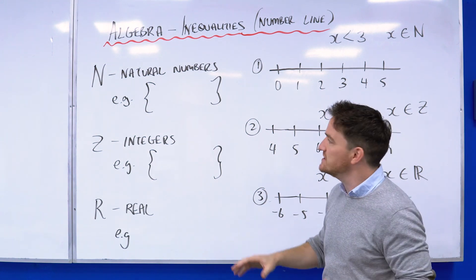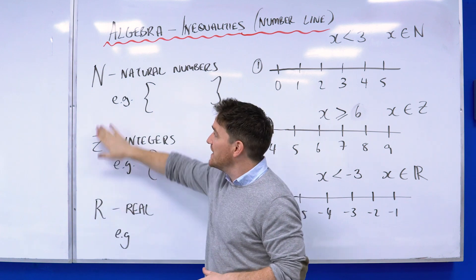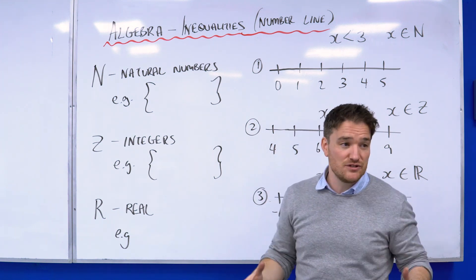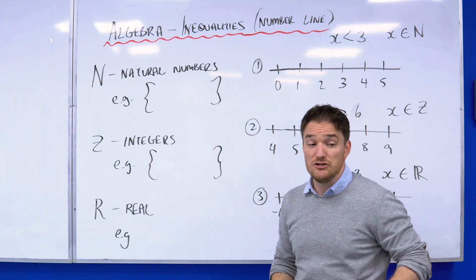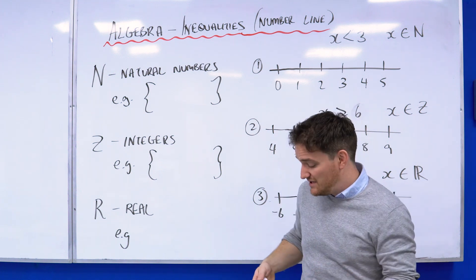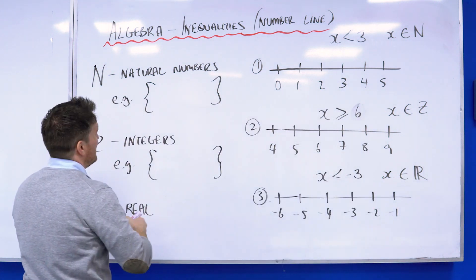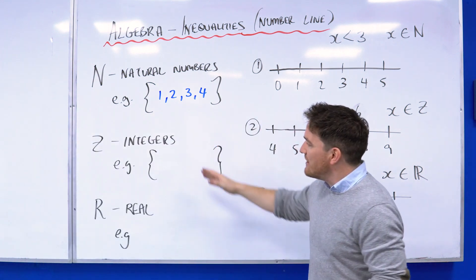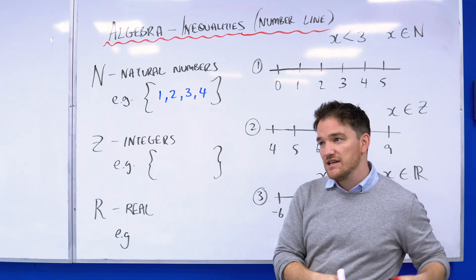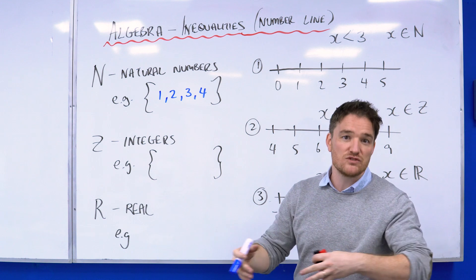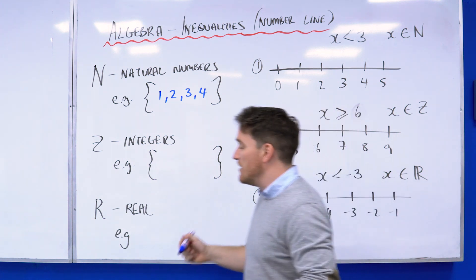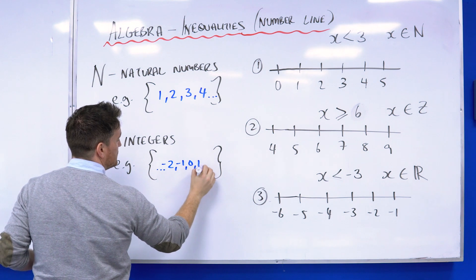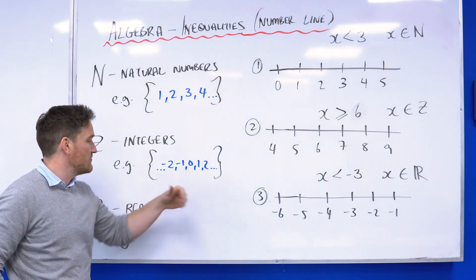Before you get into any of these number line questions, you need to be aware of N, Z, and R — your natural numbers, your integers, and your real numbers. Natural numbers are just your counting numbers. When you count you go one, two, three, four, five, six — you always start on one. So natural numbers are your positive whole numbers. Integers are the positive and negative whole numbers, including zero — so minus two, minus one, zero, one, two, and so on in each direction.